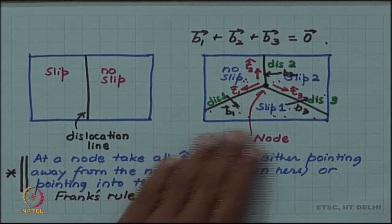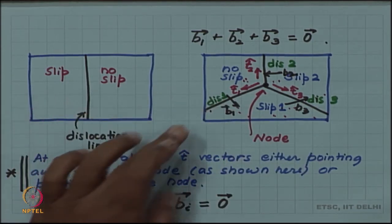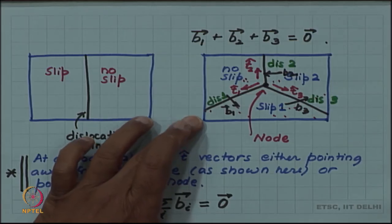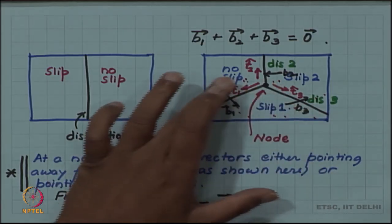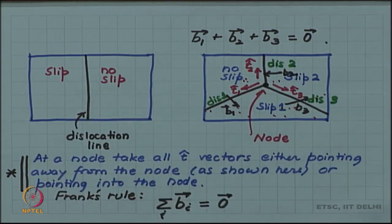I have shown you here a planar network, but the network in real crystals can be three dimensional also. So the third dislocation line need not be lying in the same plane of the paper, but may be moving out of the plane of the paper. In that case also this rule will be true.